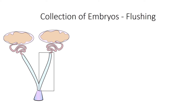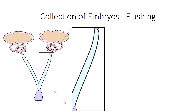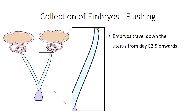To extract these, the ovaries and oviducts as well as the vaginal vault are removed and the two uterine horns parted at the cervical region. Then a syringe filled with recovery medium is inserted at one end and the embryos are flushed out of the uterus together with the medium.